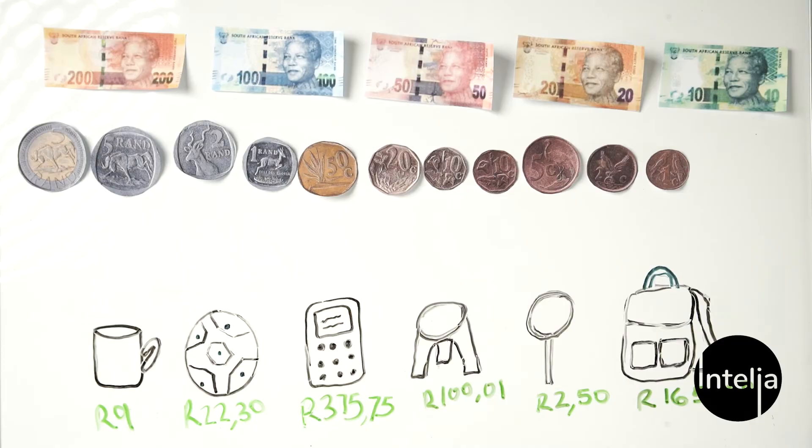In money, you generally use something called currency. Currency is a system used in a particular country. The currency we use in South Africa is the rand. In the United States you would use dollars, in England you'd use euros, in Britain you'd use pounds, and so on. Every country has its own currency.